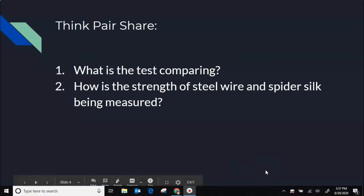That was a really cool video, wasn't it? Normally we would do a think-pair-share with this activity, but because we're doing virtual learning, we're going to do it a little different. In a minute, you're going to go into Google Classroom and answer these questions. Number one: what is the test comparing? And two: how is the strength of steel wire and spider silk being measured? Pause your video, think about those questions, and then answer them in the short answer form in Google Classroom under Science.